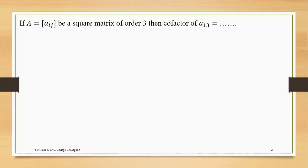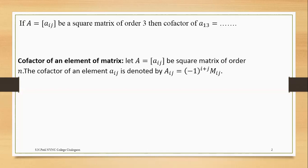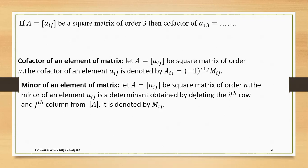The first MCQ is on the basic part of mathematics. If A is a square matrix of order 3, then the co-factor of A13 is equal to what? First we must know the definition of co-factor of an element of a matrix, which is obtained by the formula minus 1 raised to i plus j into capital Mij, where Mij is the minor of the element of the matrix, obtained by deleting the row and column intersected by that element.